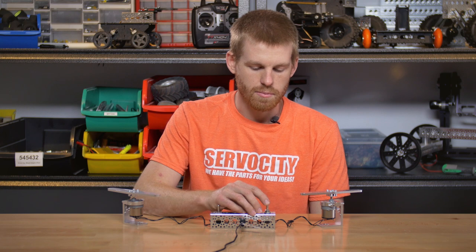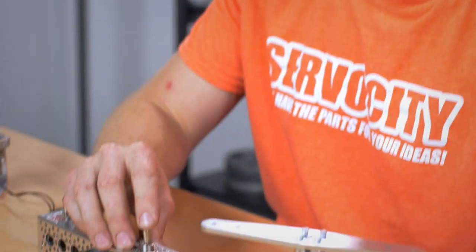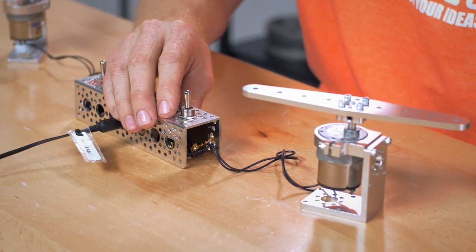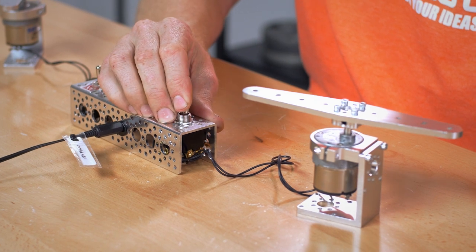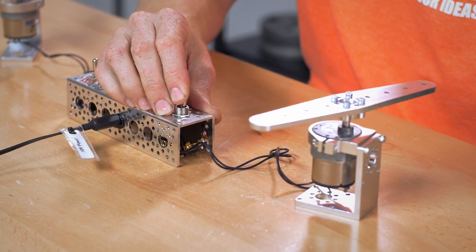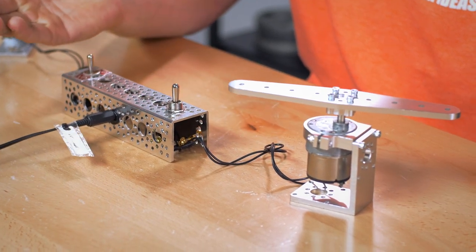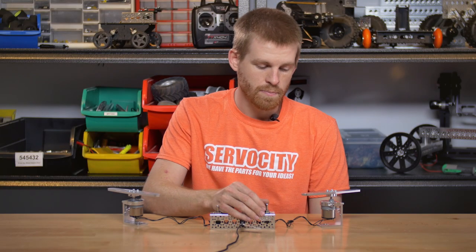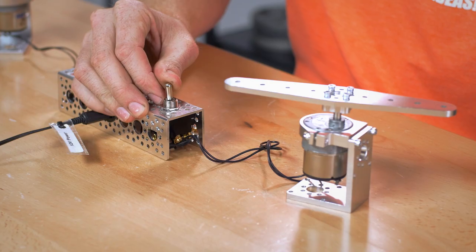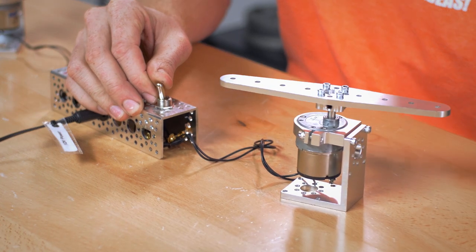This switch is similar to an electric car window switch. Whenever you push it one way, the motor runs. When you release it, it pops back to center automatically and the motor stops. When you push it the other way, it goes the other way.